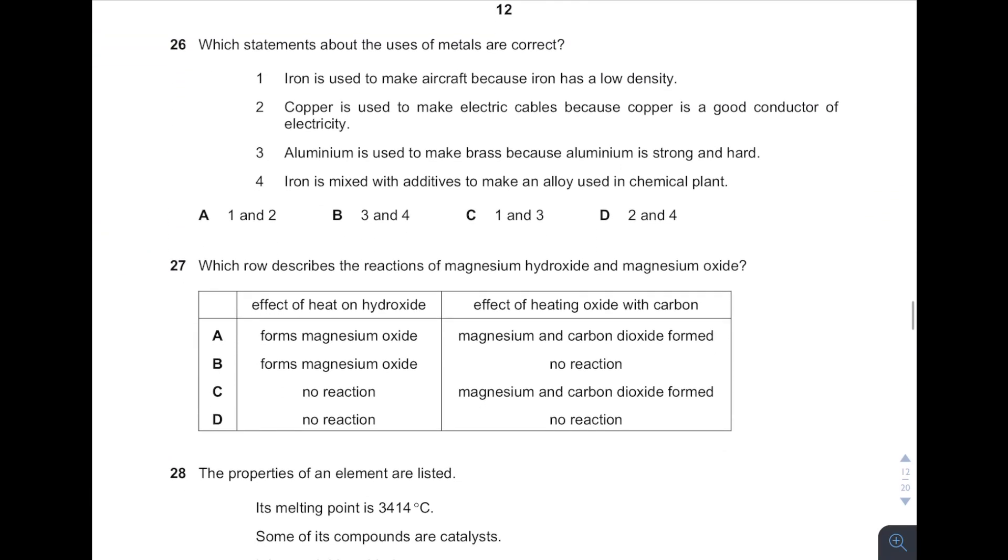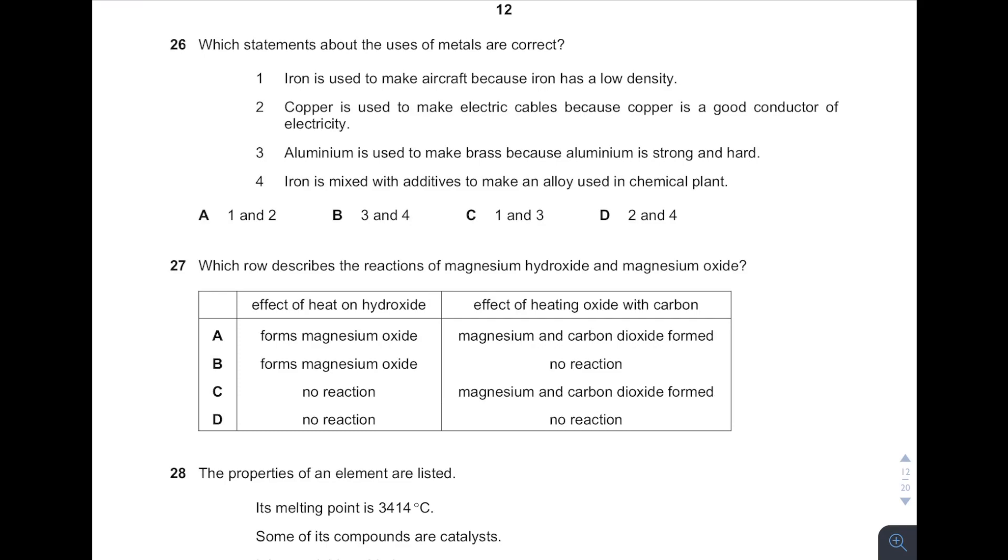Okay, then 26. Which statement about the uses of metals are correct? Iron is used to make aircraft because it has low density - no, it has to be aluminum. Copper good conductor of electricity to make electric cable - yes, correct. Aluminum is used to make brass - no, remember, aluminum is not used to make brass. And iron mixed with additive to make alloys used in plants - yes, like steel. So 2 and 4, D.